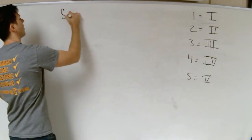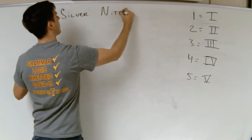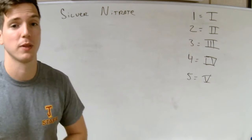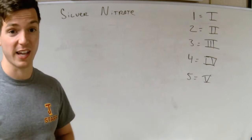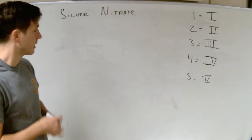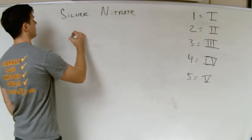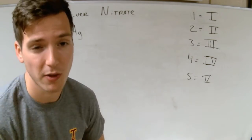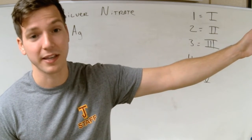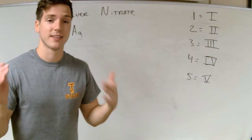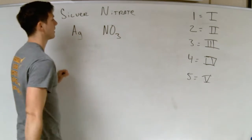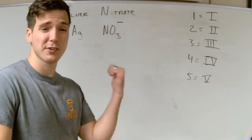Next, silver nitrate — a cool solution people use to electroplate things in silver. If we get a chance, we'll put an iron nail in some silver nitrate and watch silver form on the nail. Silver is Ag. Nitrate ends in '-ate,' so it's most likely on the polyatomic ion sheet. Anything ending in '-ide' is on the periodic table, except for hydroxide and cyanide. Nitrate is NO₃ with a negative 1 charge.